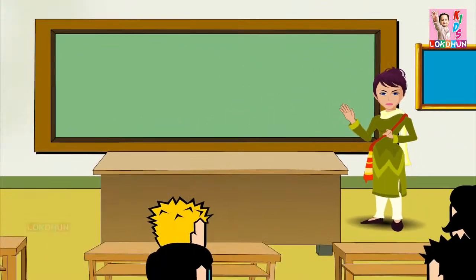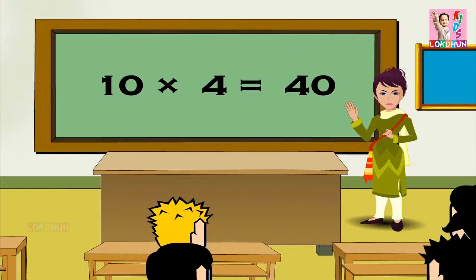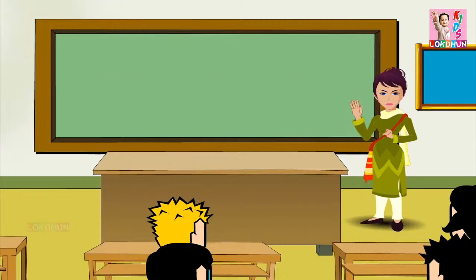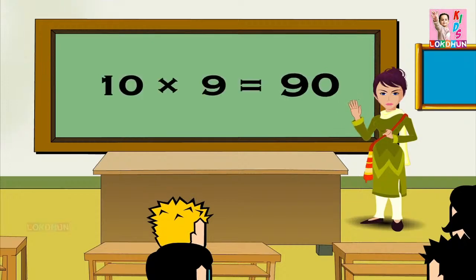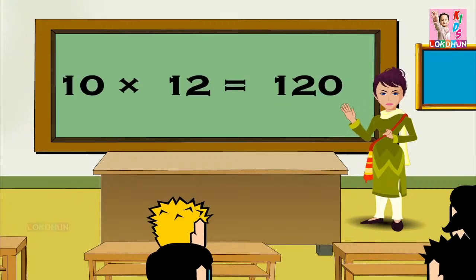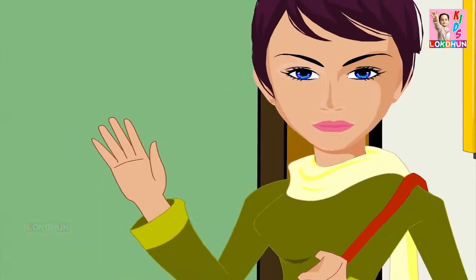Ten ones are ten, ten twos are twenty, ten threes are thirty, ten fours are forty, ten fives are fifty, ten sixes are sixty, ten sevens are seventy, ten eights are eighty, ten nines are ninety, ten tens are one hundred, ten elevens are one hundred and ten, and ten twelves are one hundred and twenty.